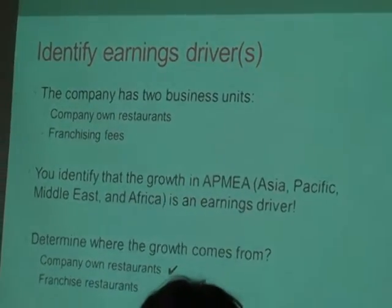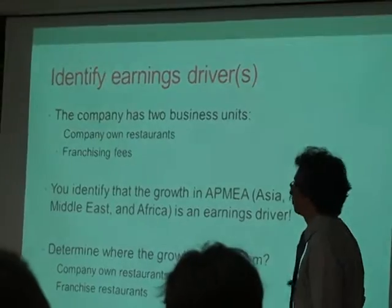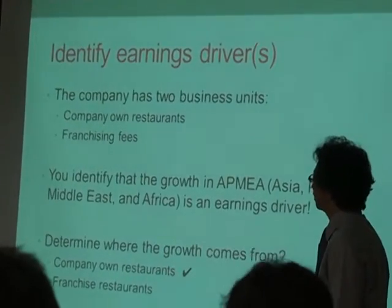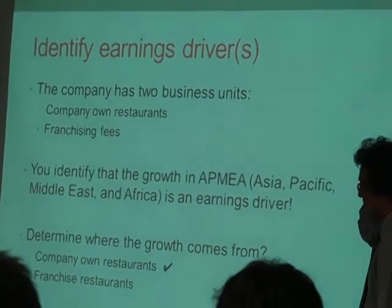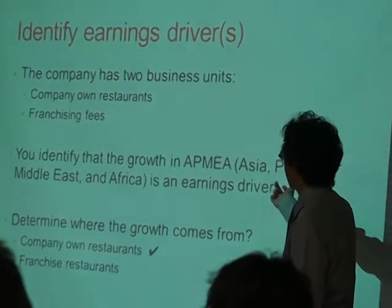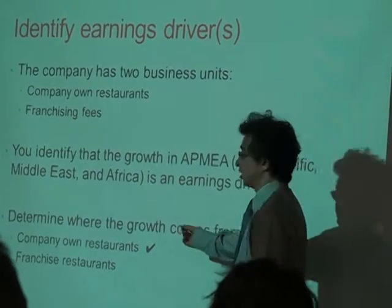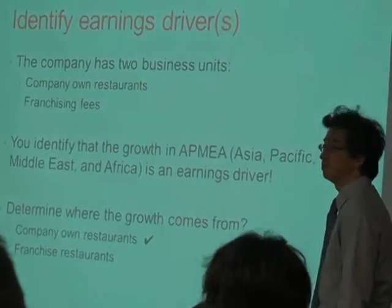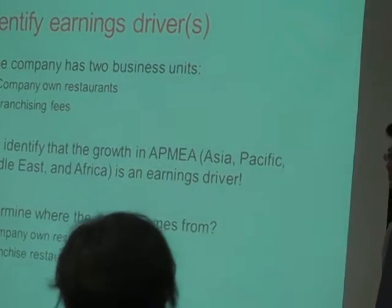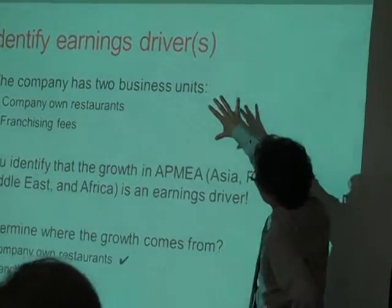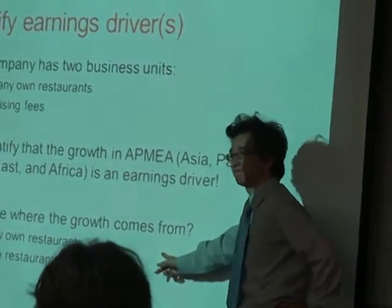We're going to use McDonald's as an example today. The company has two business units: company restaurant and franchise. Assume that you identify the growth in ACMEA — Asia, Egypt, Pacific, Middle East, Africa — and you have to determine where the growth comes from. Assume the growth comes from company-owned restaurants. Identify all business units, find where growth is coming from, and check it.